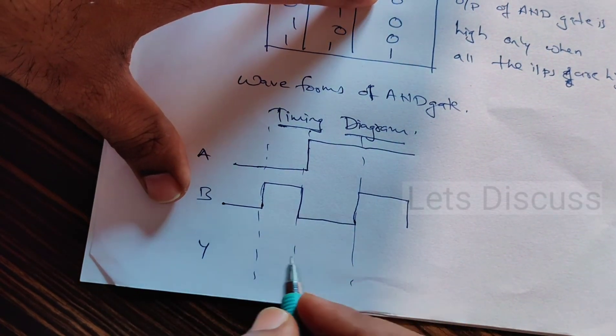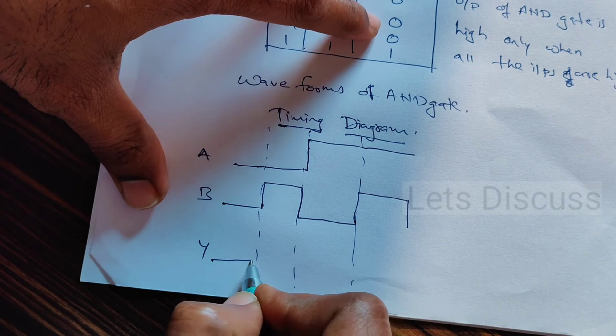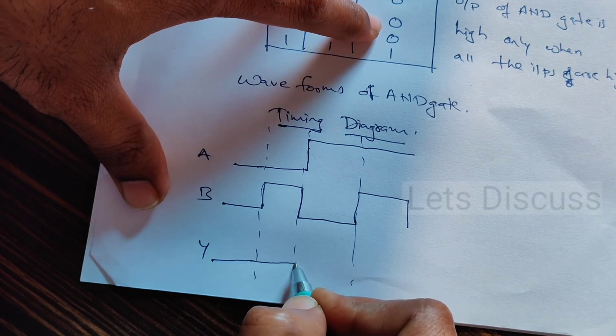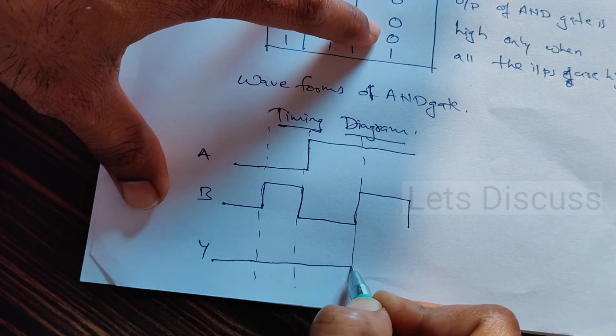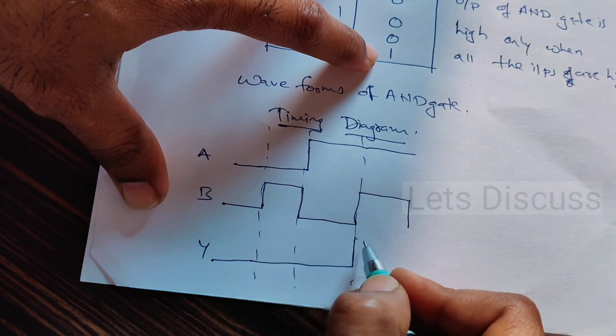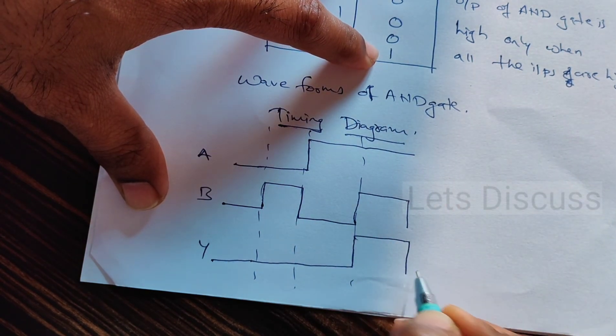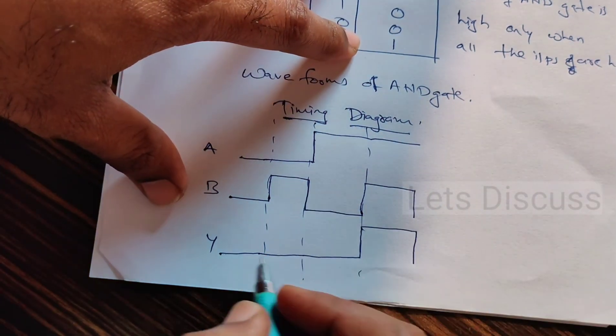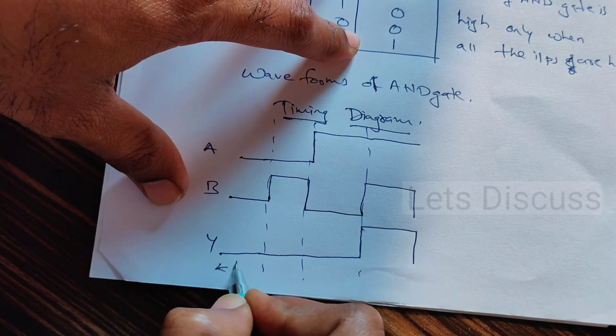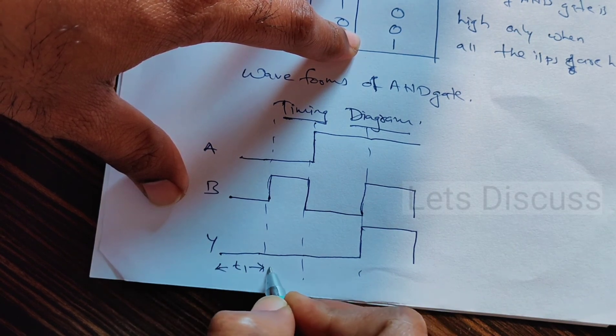What are the outputs? 0 for the first time interval, 0 for the second time interval, 0 for the third time interval, finally it is 1.